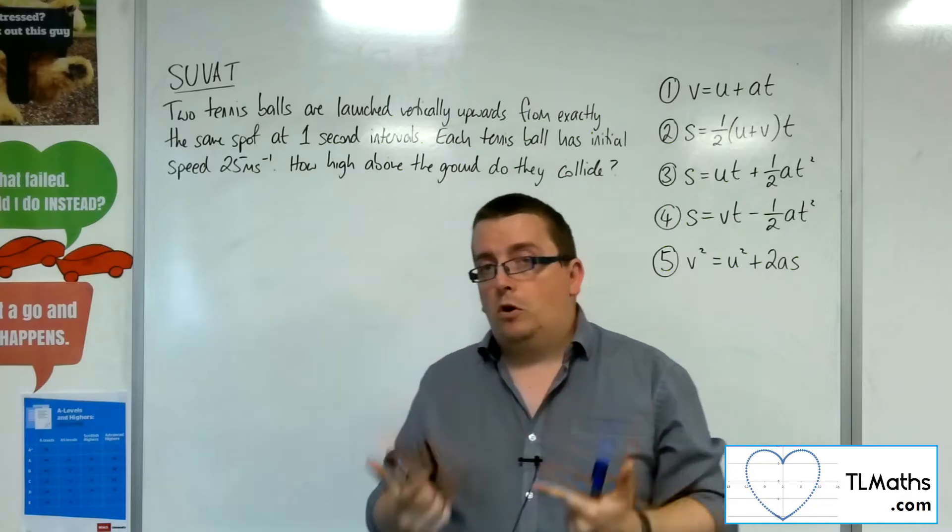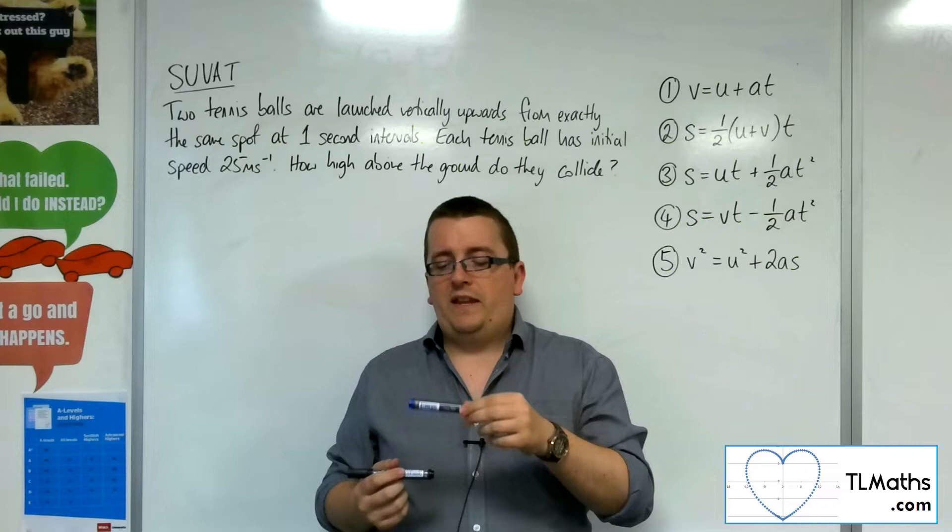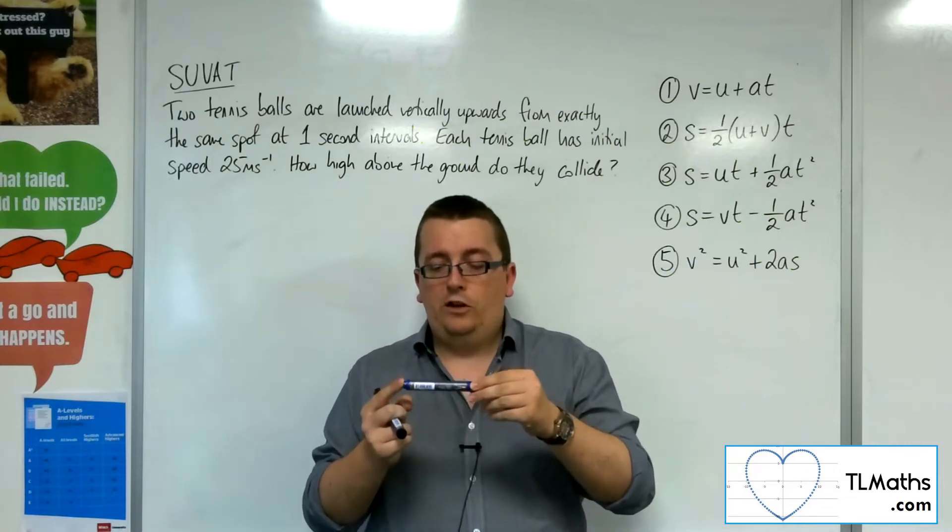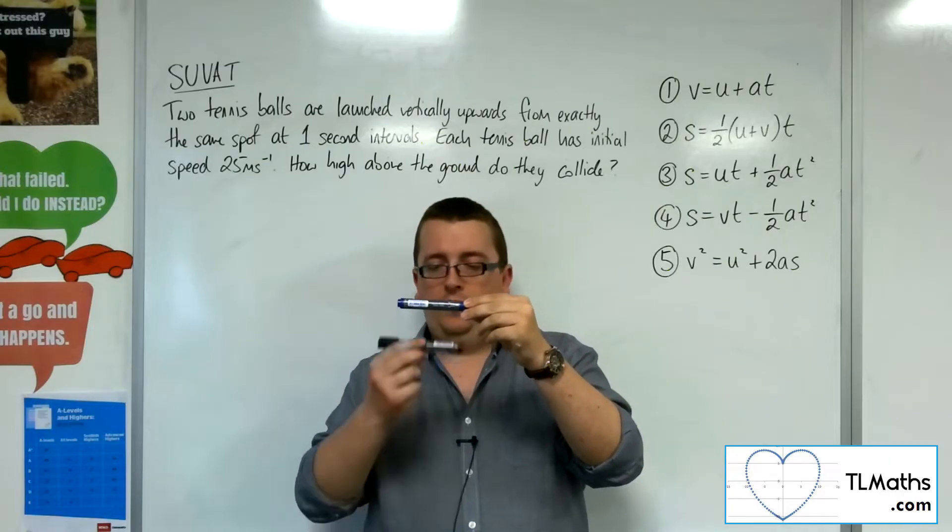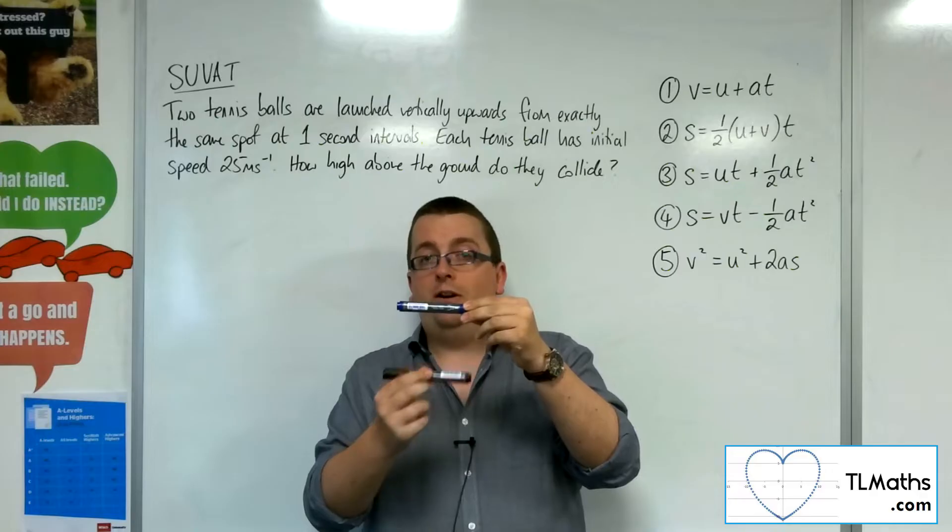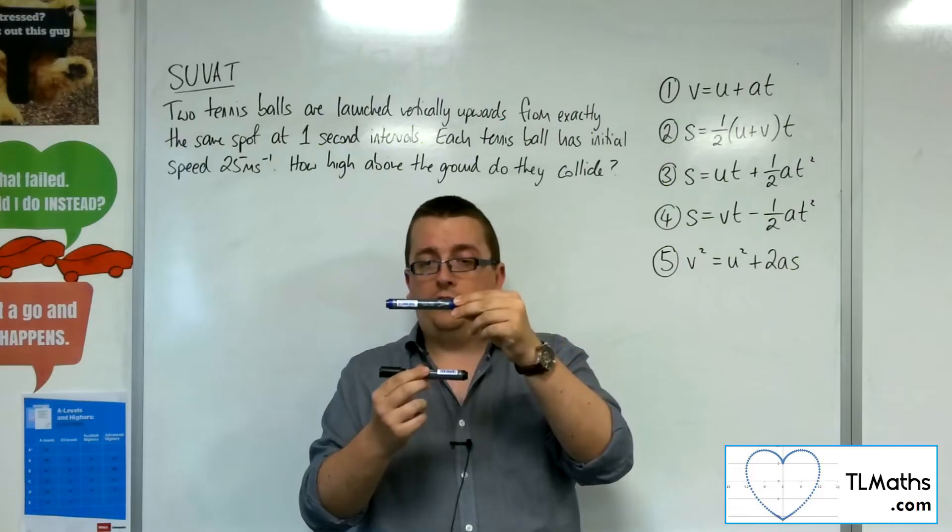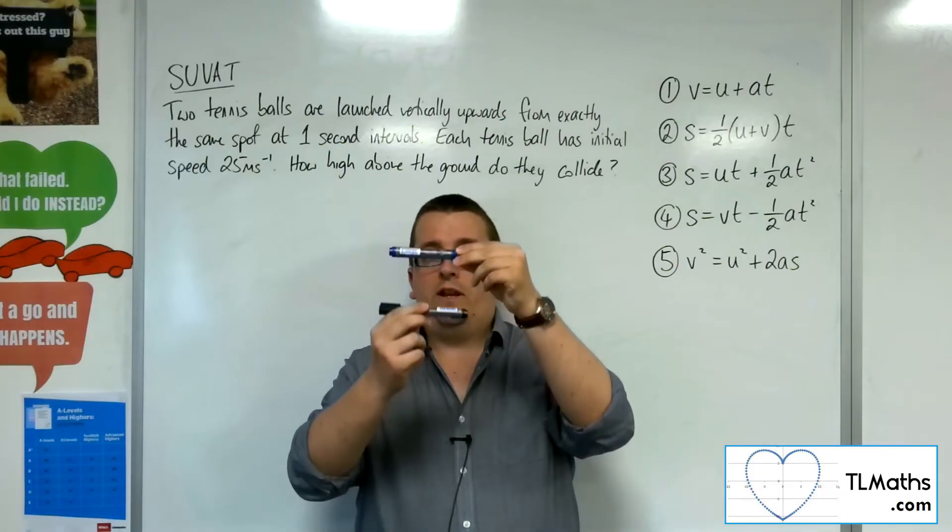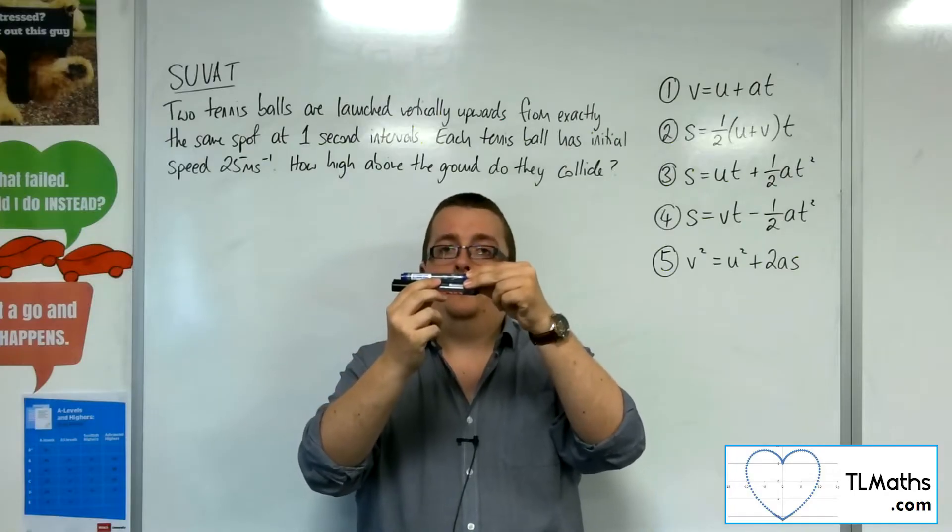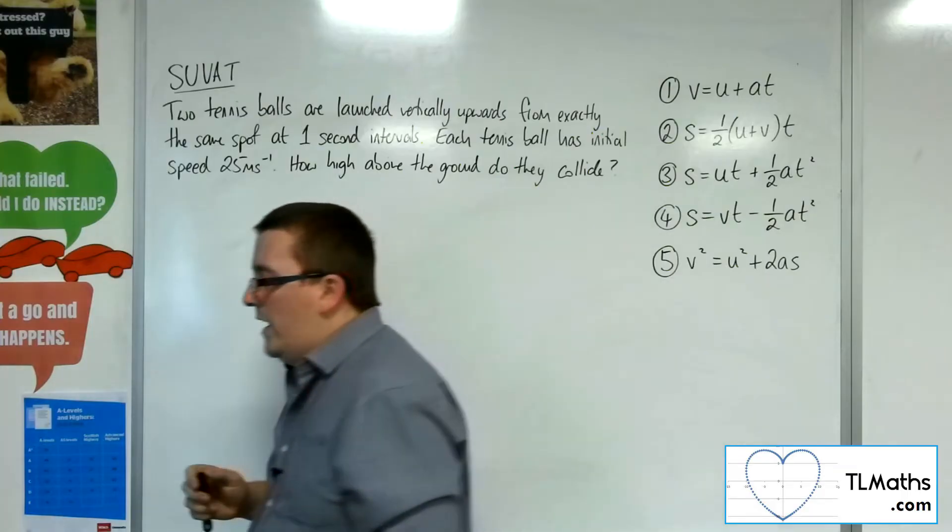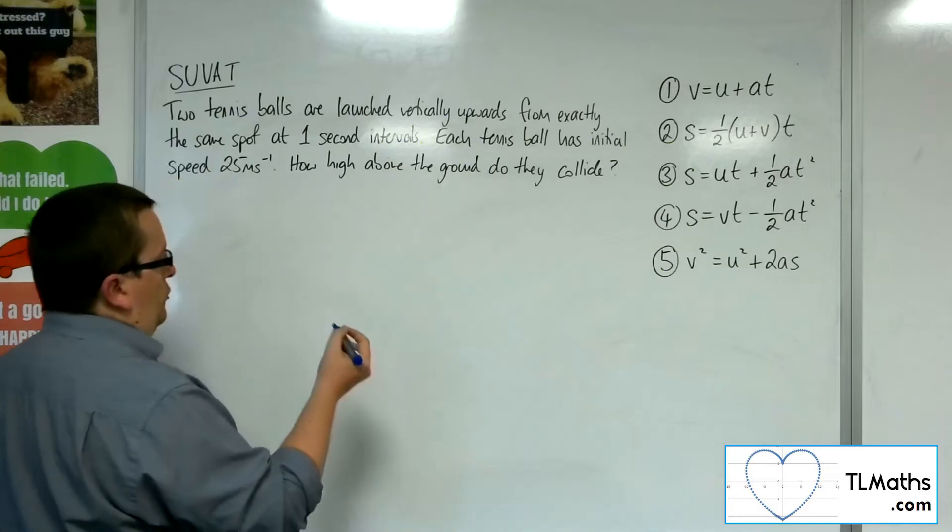Now, how are we going to model this? Well, it would make sense if we think about modelling the first ball and having a look at where it gets to after one second. So that then, we can model the time t in the equations as the same thing, because we've got one particle starting here, one particle starting there, and then we can see where the displacements will be the same. So let's have a look at that first ball.